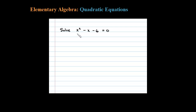We're asked to solve this by completing the square. The first step is to add the constant term to the other side: x squared minus x equals 6. Now let's leave some space for the special number that's going to complete the square.